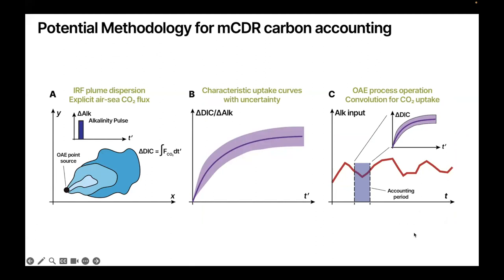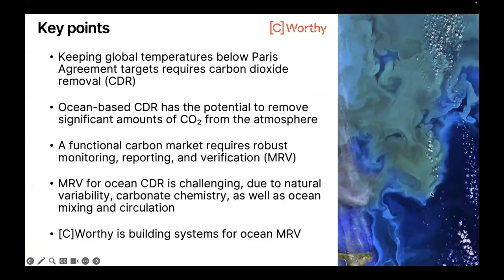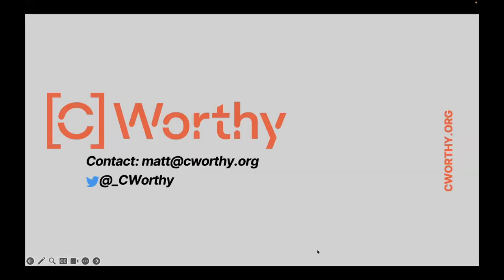To recap: over the next several years, we envision building SeaSTAR in the context of observationally rich environments, leveraging intentional field trials — deployments of ocean alkalinity, direct ocean removal, and eventually seaweed farms — as well as areas with intensive observational arrays that enable strong constraints on process-oriented formulations in the modeling system. To recap the key points: carbon dioxide removal is required; ocean-based CDR has the potential to scale to climate-relevant quantities, but we need MRV; MRV in the ocean is challenging because the ocean is a dynamic system — an ecosystem entrained in a turbulent fluid; and Seaworthy is tackling this through the application of oceanographic models and other software systems to support MRV. Thank you.